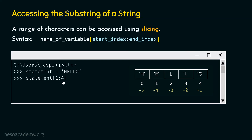So we will get the substring starting from index 1, going up to index 3. The end index character is not included in the range, so it goes from 1 to 3, not 1 to 4. Characters at index 1, 2, and 3 are accessed, and hence if we hit enter, we will get the string ELL, not ELLO.